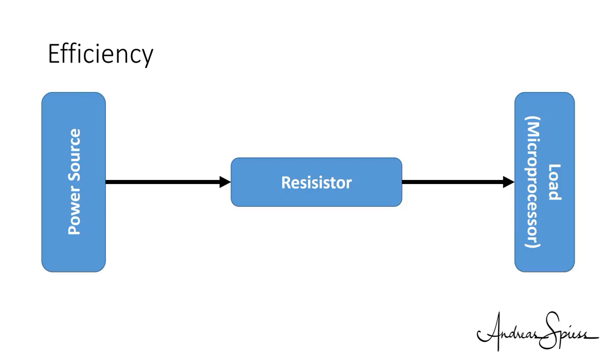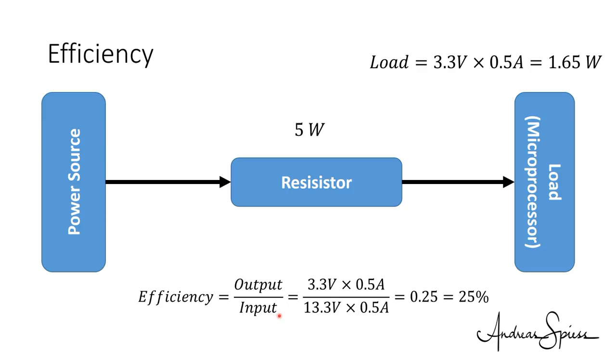But is this really what we want? This leads us to the next topic. Efficiency. Our microprocessor, the load, needed 3.3 volts times 0.5 ampere equals 1.65 watts. And our resistor dissipated 5 watt. Efficiency is defined as output divided by input. 3.3 times 0.5 divided by 13.3 times 0.5 equals 0.25 or 25%. Not a lot. This is more a heating element than a power supply.